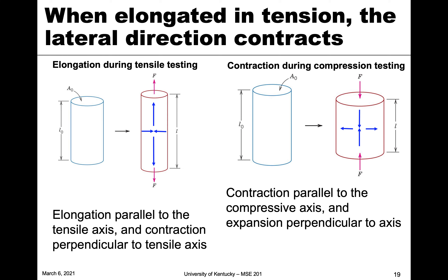One thing to note is that when we have elongation under tension, to preserve volume the material also has to contract in the lateral direction. If a material becomes longer, it has to contract laterally to conserve volume. The same is true in compression — the material contracts and gets shorter, but it also gets wider because volume can't simply be removed. So there's elongation parallel to the tensile axis and contraction perpendicular, or contraction parallel and expansion perpendicular. That's something we'll consider in one of the next modules.